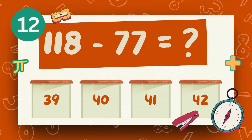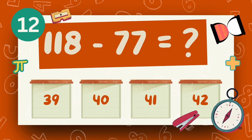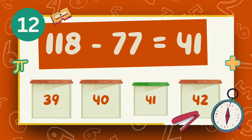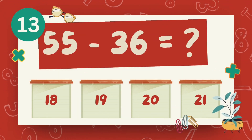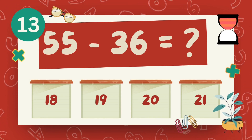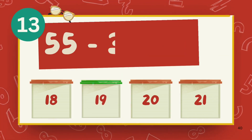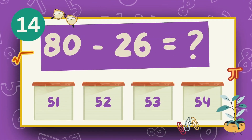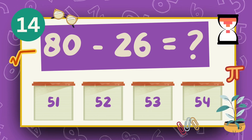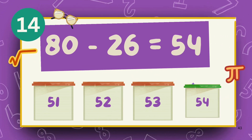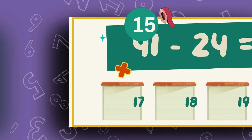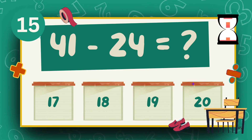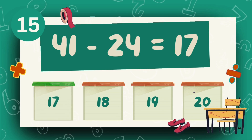What is 118 minus 77? The answer is 41. What is 55 minus 36? The answer is 19. What is 80 minus 26? The answer is 54. What is 41 minus 24? The answer is 17.